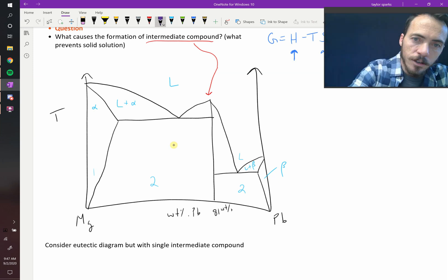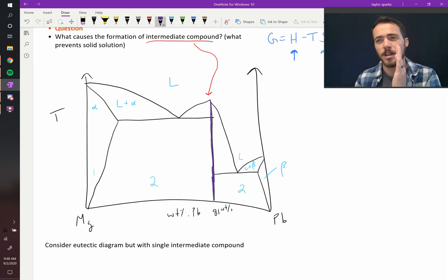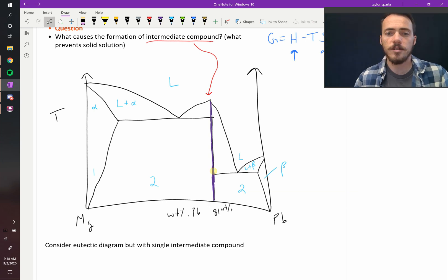All along this line right here, this vertical line, this is a compound. And what do we mean by a line compound? A line compound is just something that exists at a very precise window of stoichiometry. There is no solid solubility. You can't dissolve extra magnesium or lead into this compound.